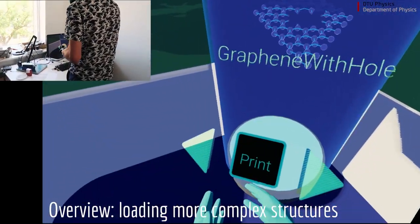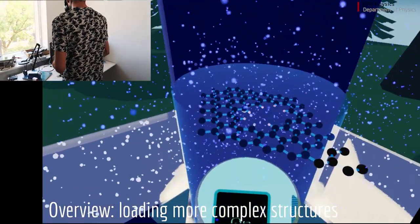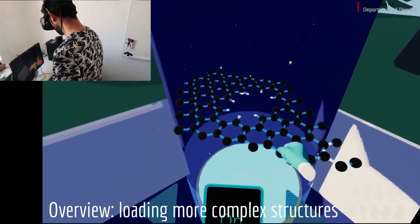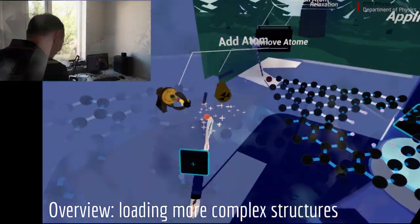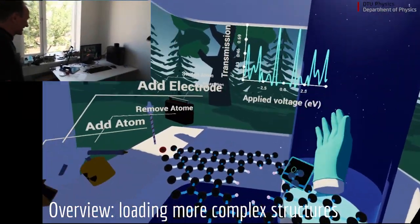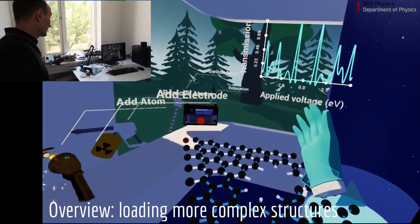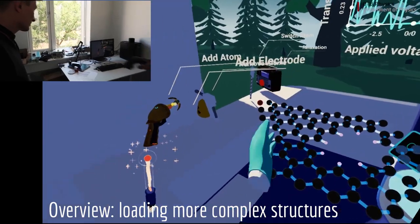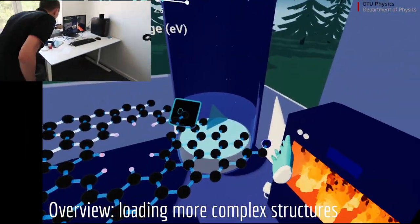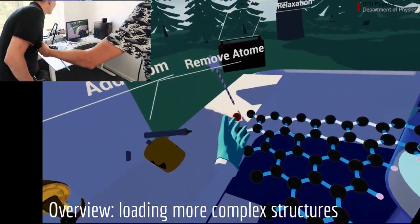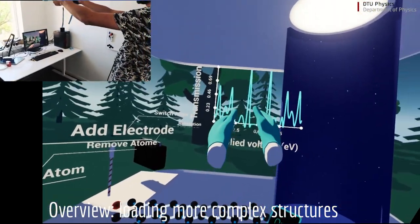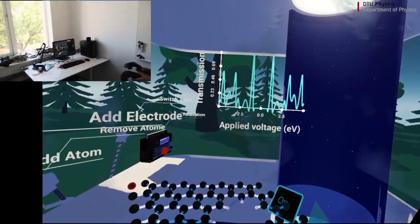Here I got a graphene sheet with a hole in the center. I can just print it in my virtual world and bring it here. If I put some electrodes, I can start seeing some transmission. Can you measure, can you put electrodes and this will work? Yeah, this is actually what I just did. This is like the negative electrode and this is the positive electrode right here.